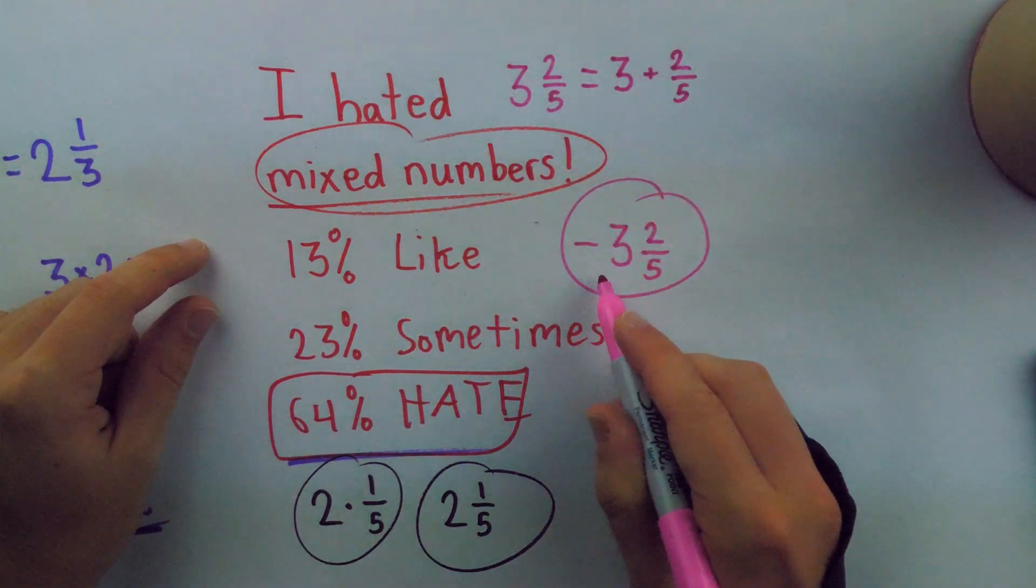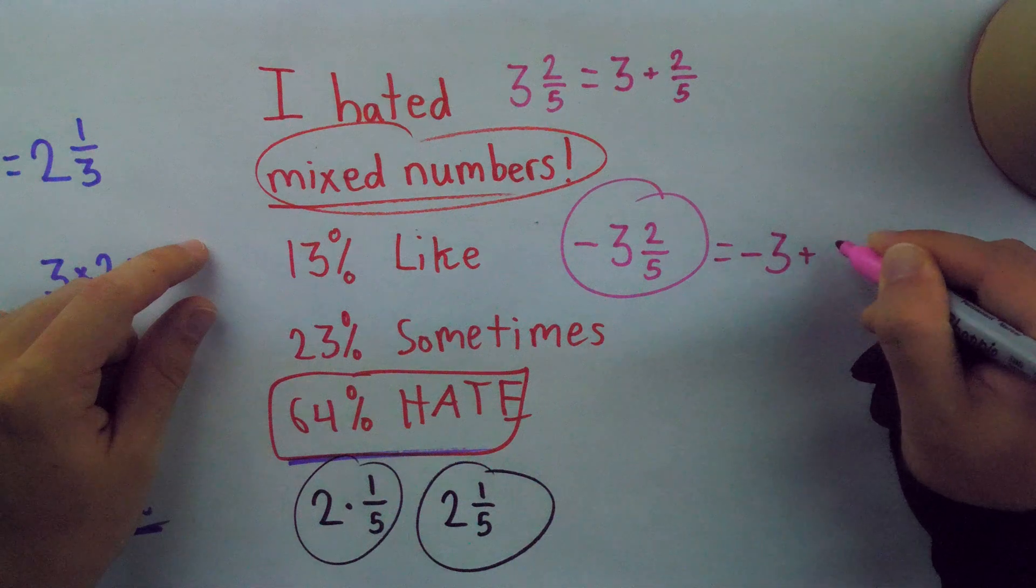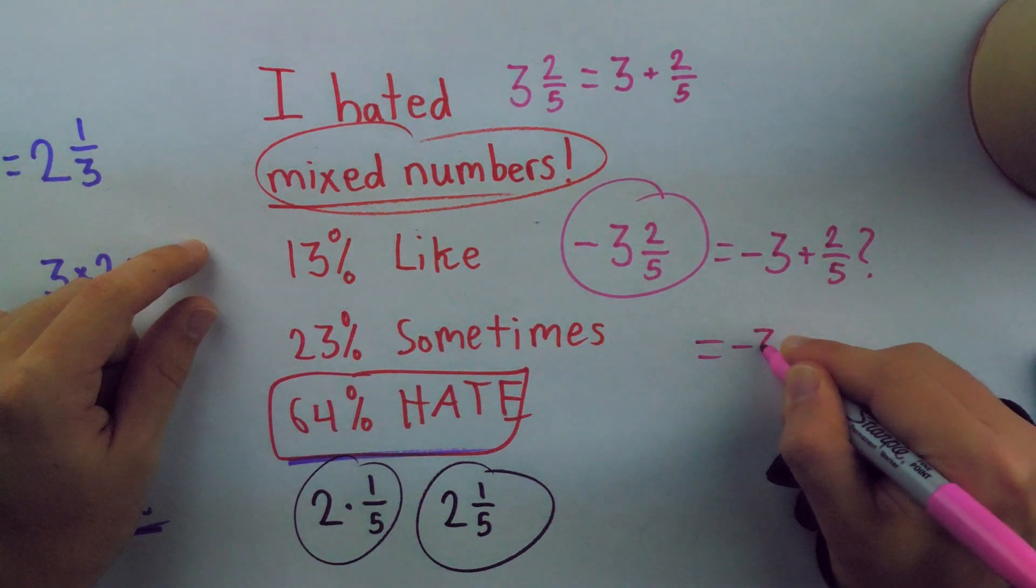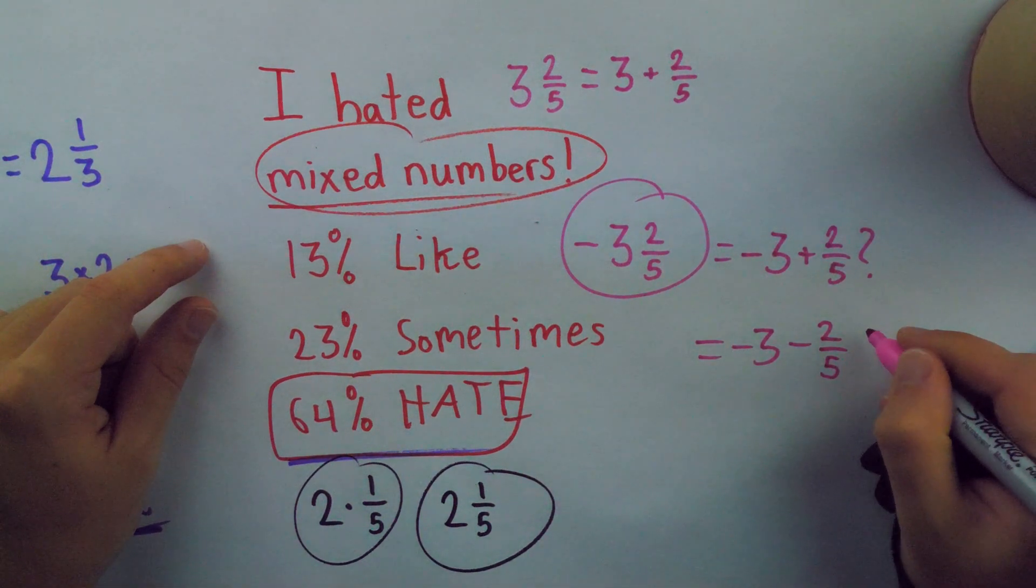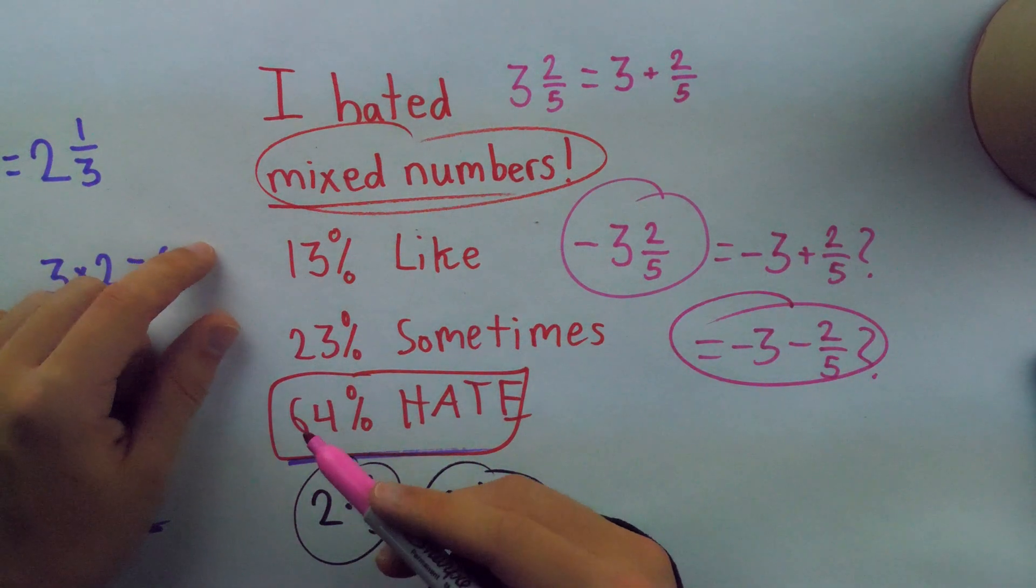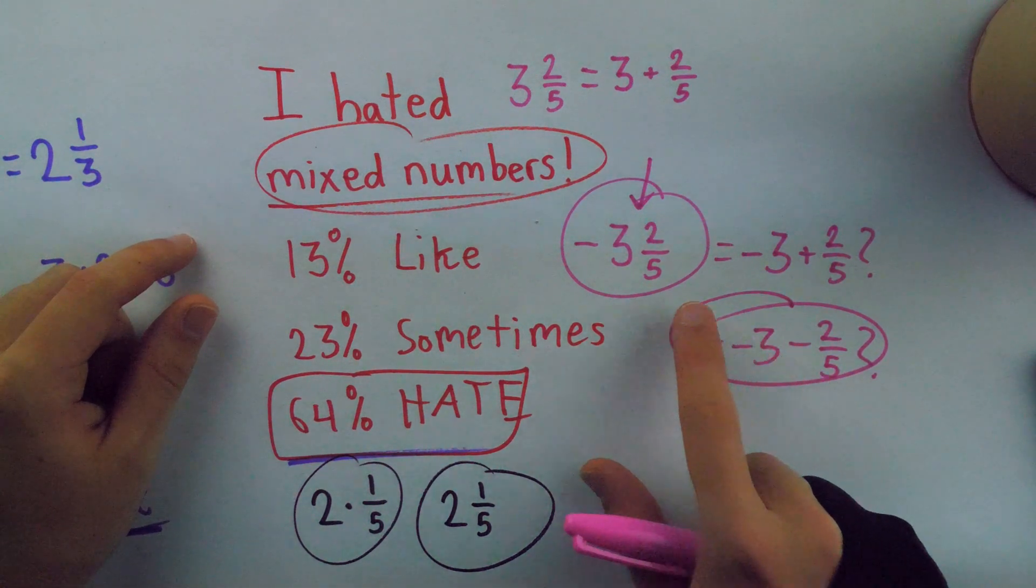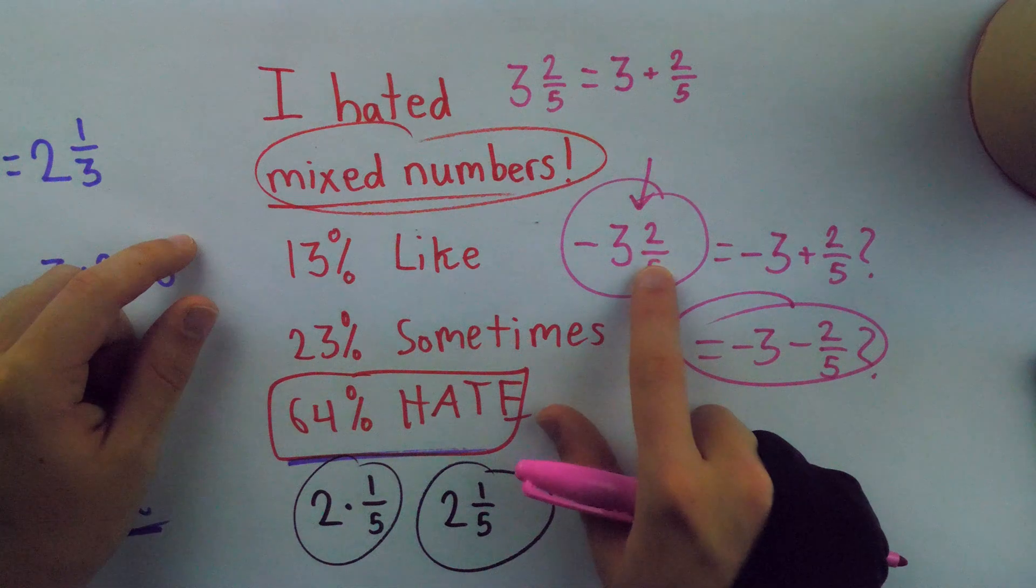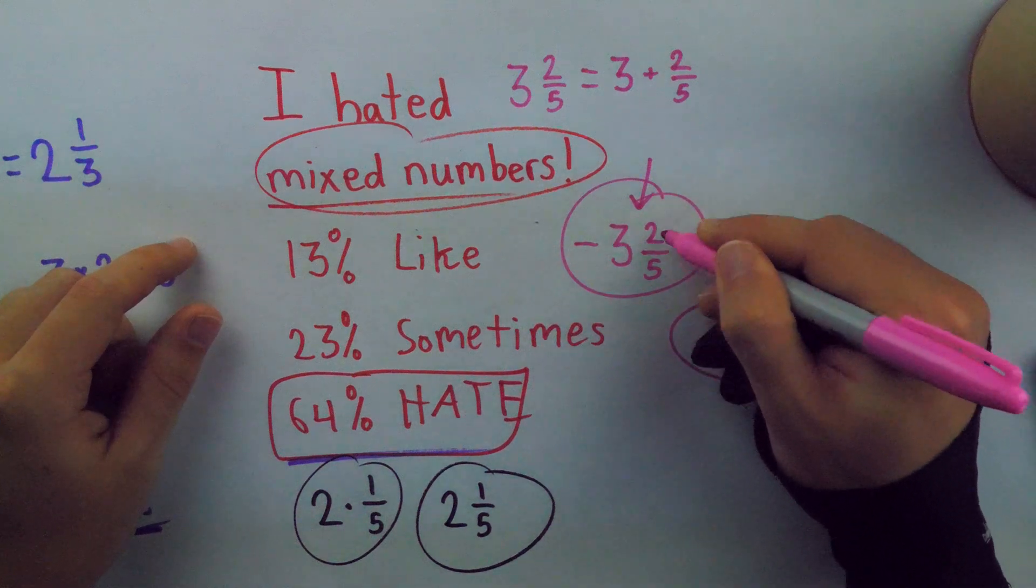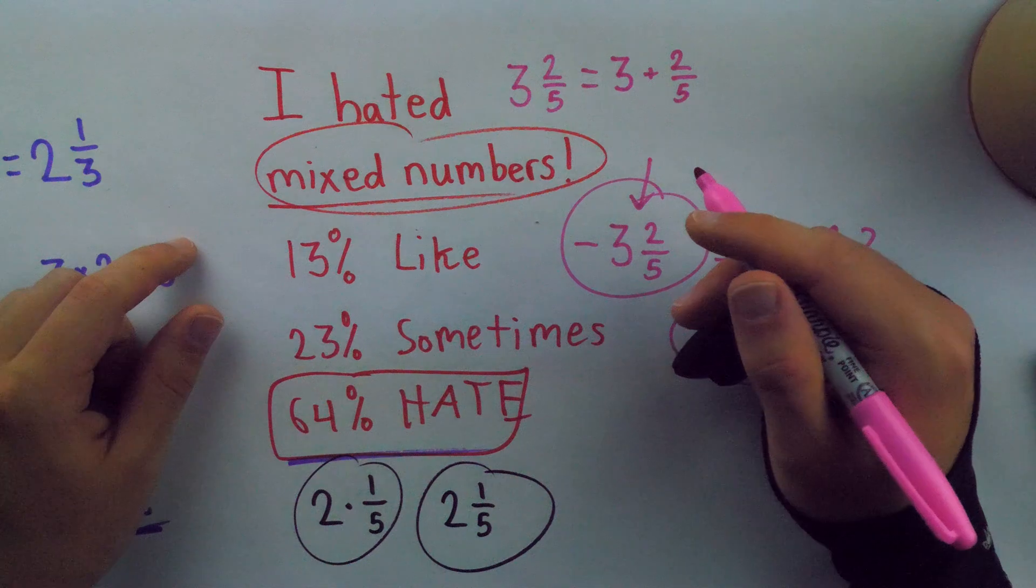So then, is negative three and two-fifths equal to negative three plus two-fifths? That feels kind of weird. Or is it equal to negative three minus two-fifths, which also feels a little weird? I guess it seems like it's usually equal to this one. Just based on seeing this appear in textbooks, I think this is the convention, that it's assumed the negative applies to both the whole and the fraction. But you probably agree with me that it's pretty ugly notation.